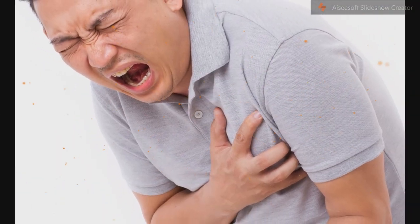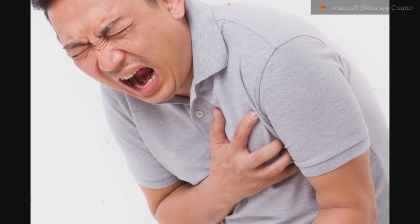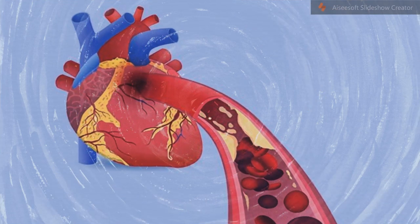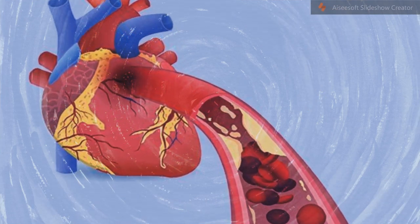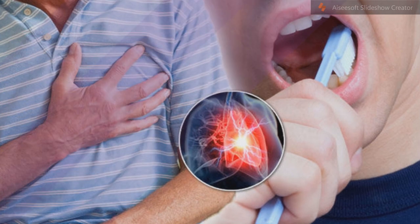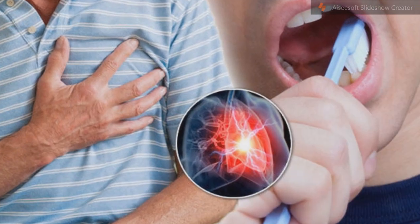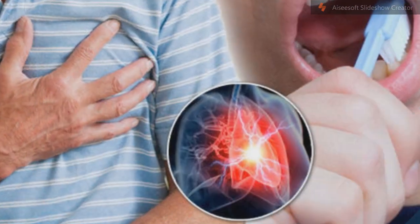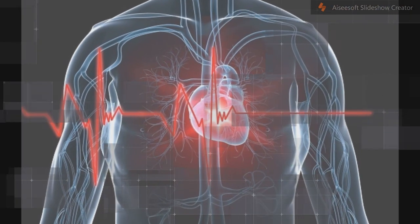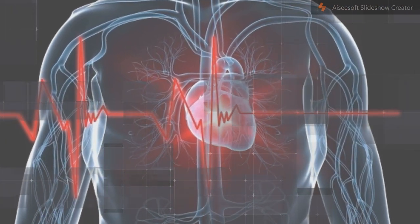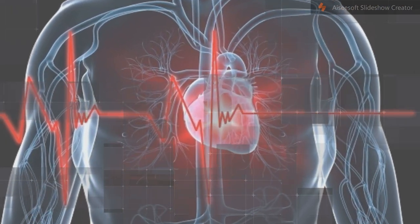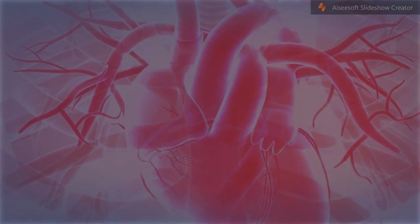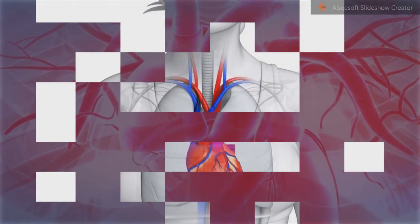Coronary artery bypass grafting is only considered when the affected area of heart muscle is large and PCI is unsuitable, for example with difficult cardiac anatomy. After PCI, people are generally placed on aspirin indefinitely and on dual antiplatelet therapy — generally aspirin and clopidogrel — for at least a year.